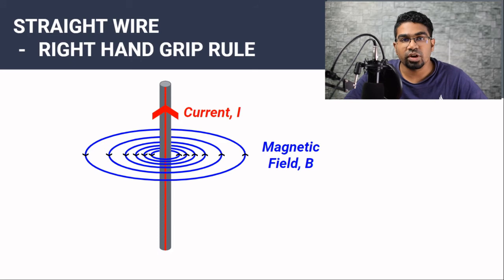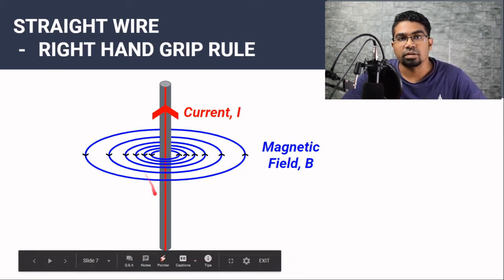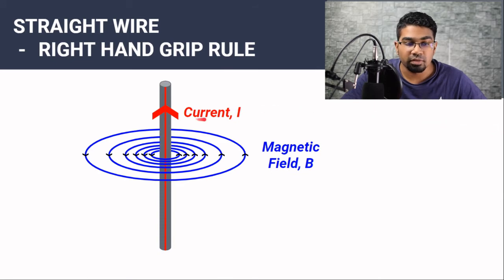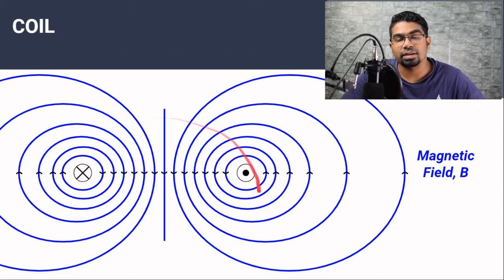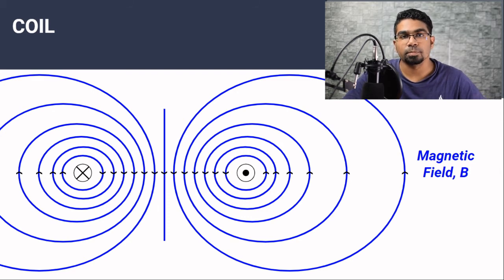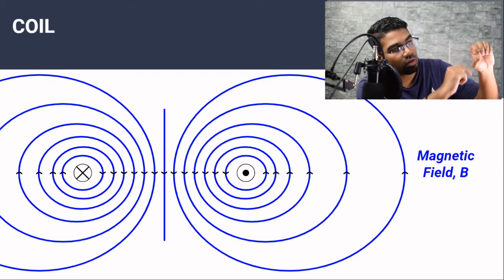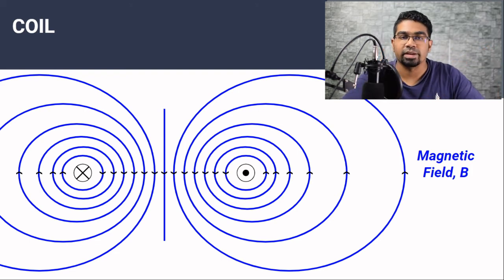How do we increase the strength of the magnetic field? For a straight wire, by increasing the current — when we increase the magnitude of the current, the strength of the magnetic field increases as well. This is the same for a coil; when we increase the magnitude of current flowing through the coil, the strength of the magnetic field increases. But for a coil, we can also increase the number of turns, coiling more wire around the coil, which will increase the strength of the magnetic field.